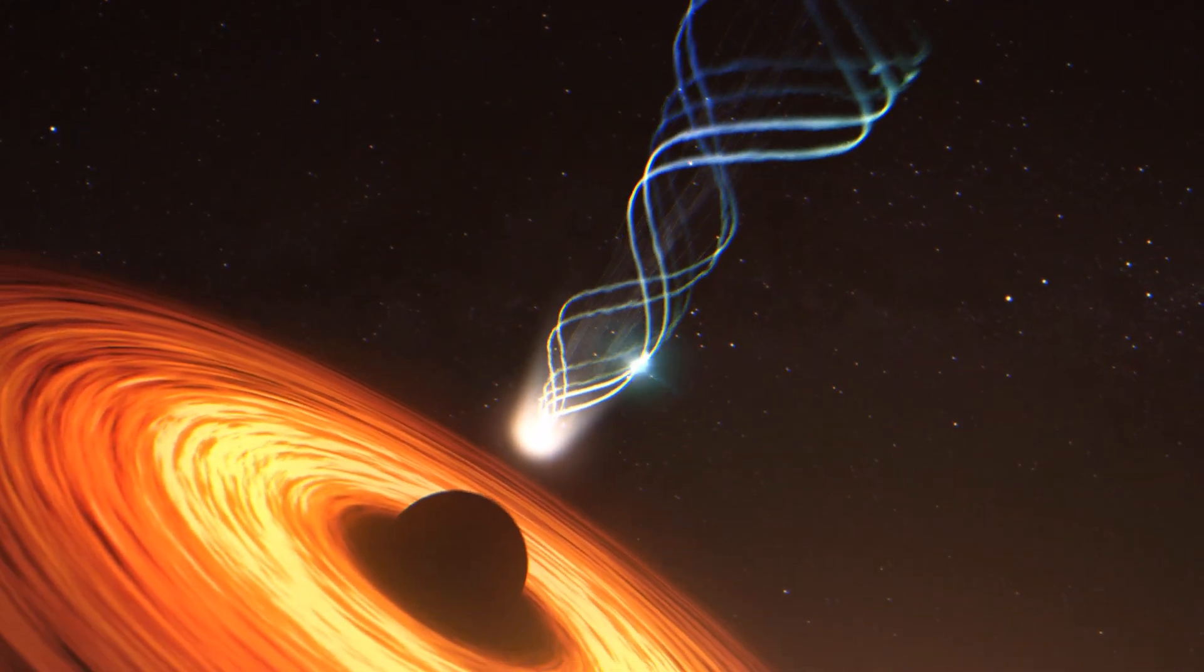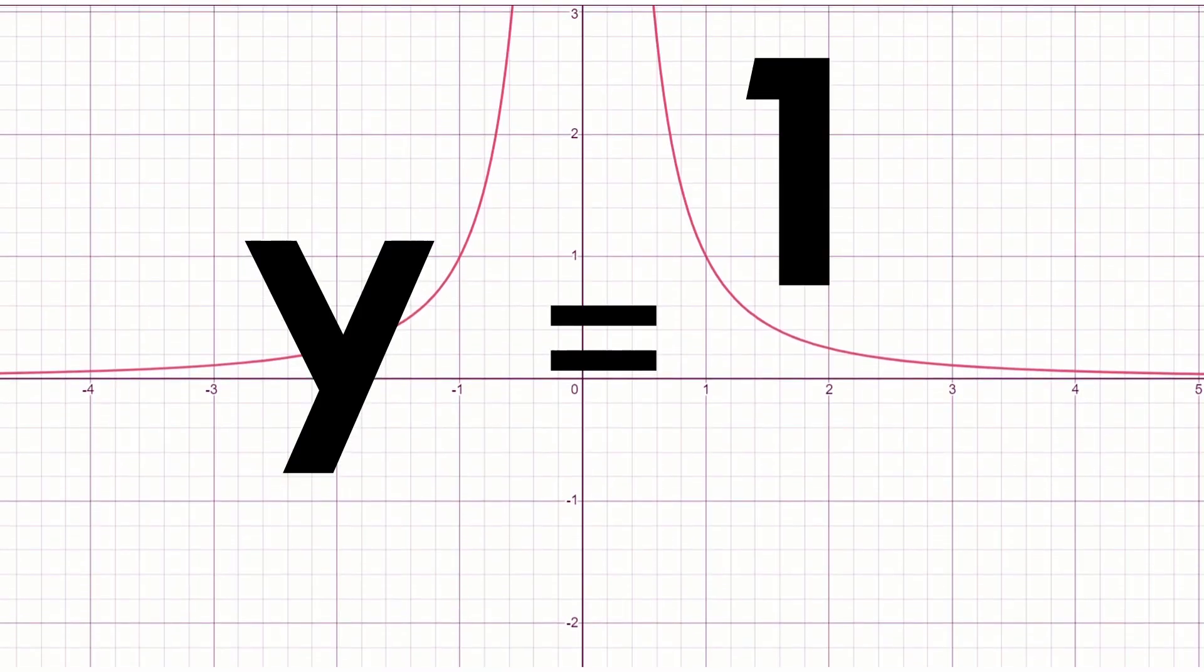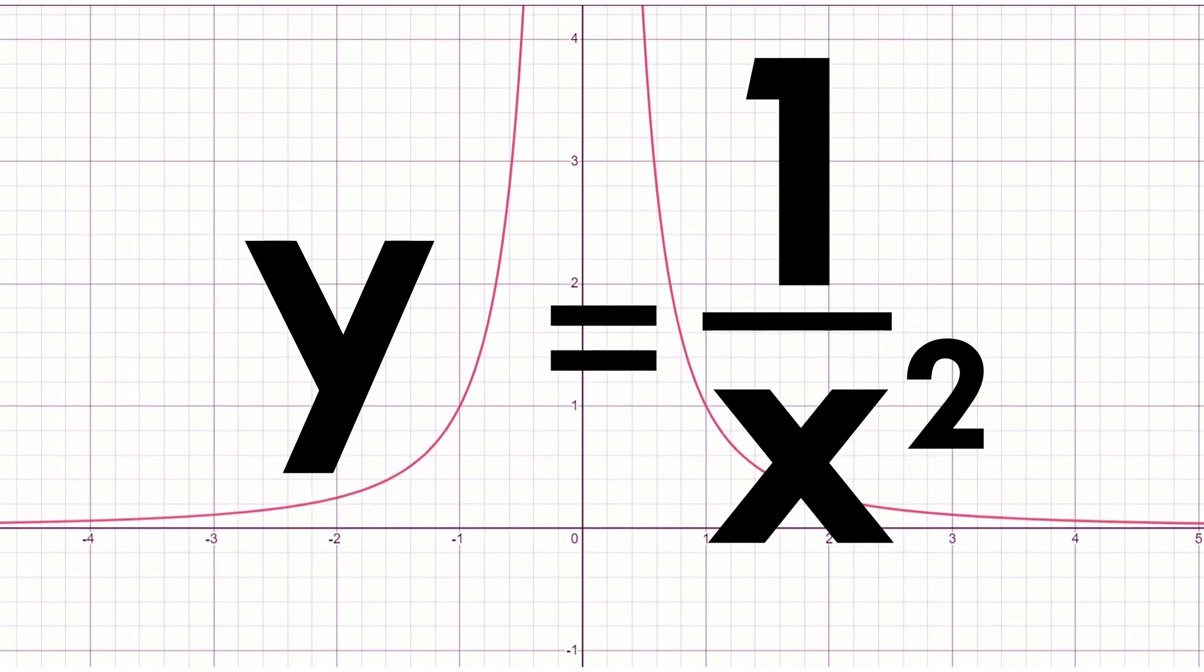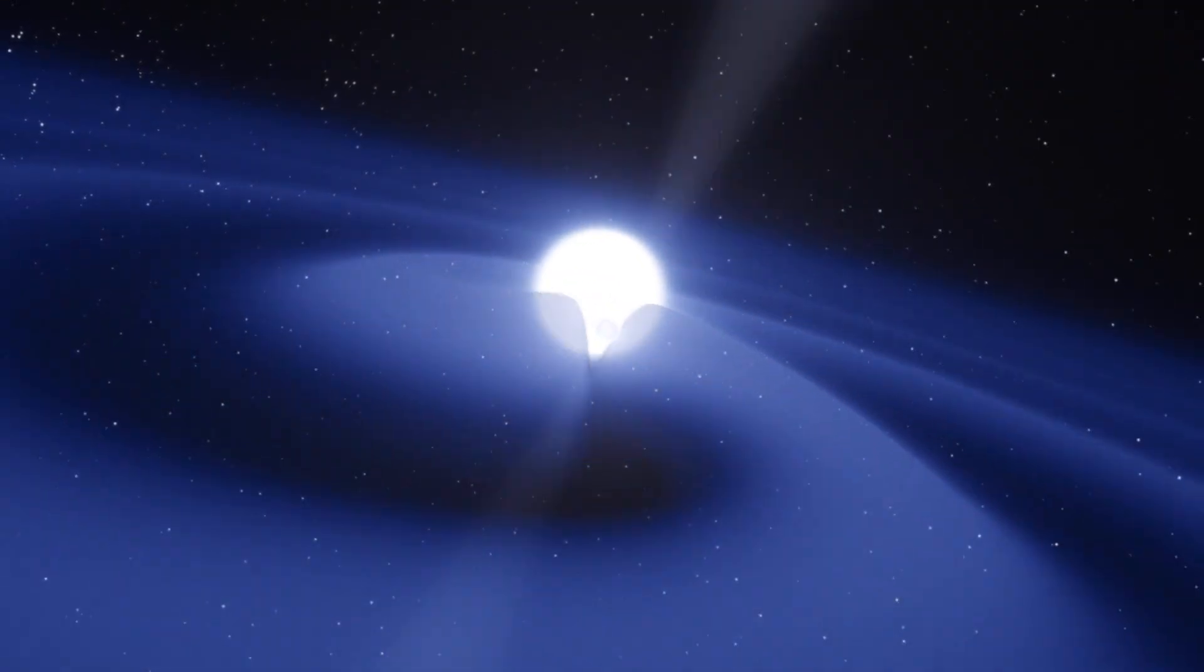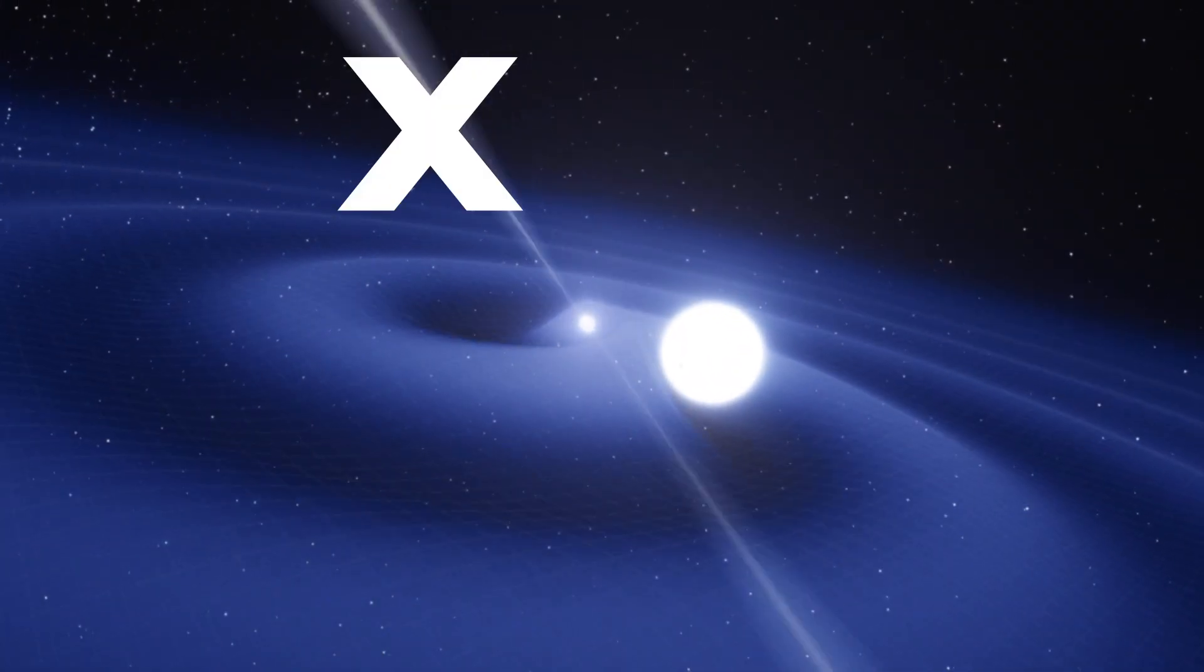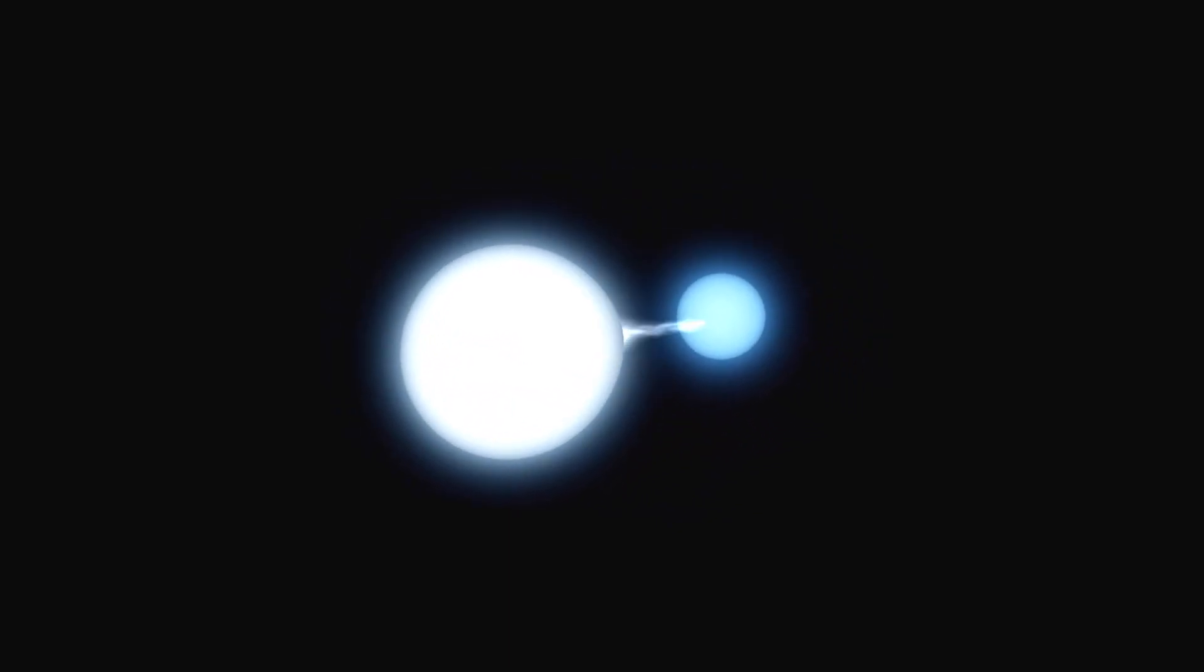To illustrate, consider a simple example of a singularity in the function 1 over x squared as x approaches 0. This doesn't mean there is no curvature for x smaller than 0. It just signifies a lack of connection between the two parts. The same concept could apply to the Big Bang singularity.